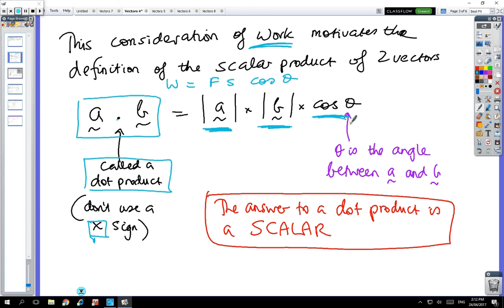The answer to a dot product is a scalar, and this is what you have to know. This is the important thing and it gets used in a lot of different ways. The dot product of two vectors is the size of a times the size of b times the angle between them, and it's a scalar answer.